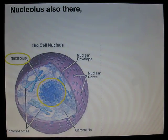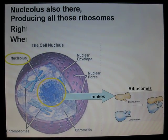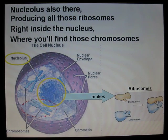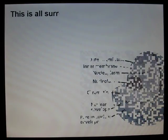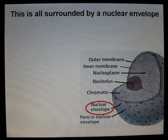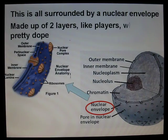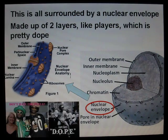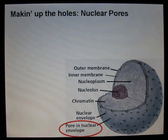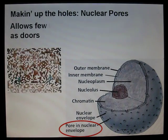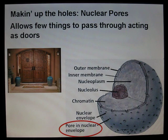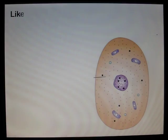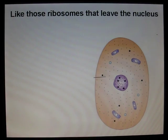Nucleolus also — they're producing all those ribosomes right inside the nucleus where you'll find those chromosomes. This is all surrounded by a nuclear envelope, made up of two lipid bilayers, which is pretty dope, making up the nuclear pores, allowing things to pass through, acting as doors, like those ribosomes that leave the nucleus.